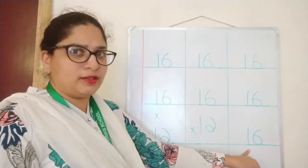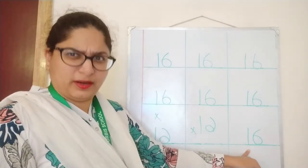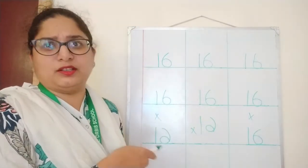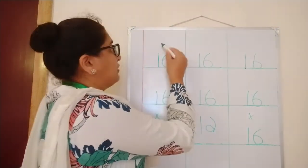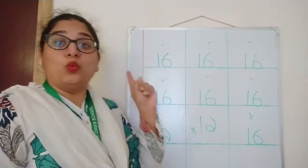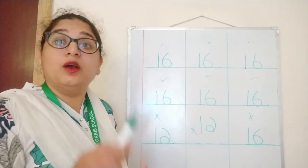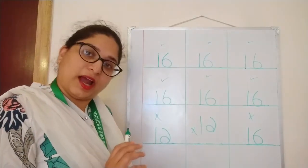This is also not the correct way to write. You are going to write the way I showed you here. You are going to write 1, 6, 16. Understood?